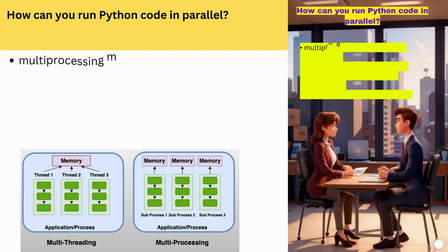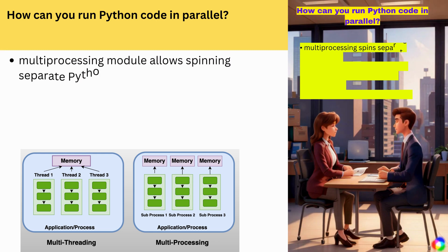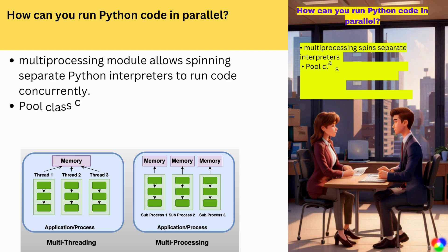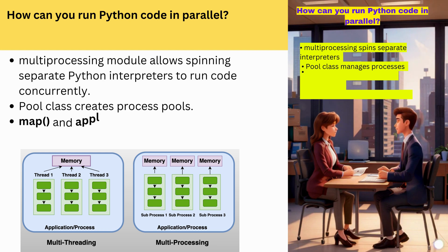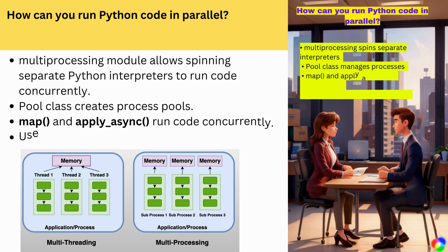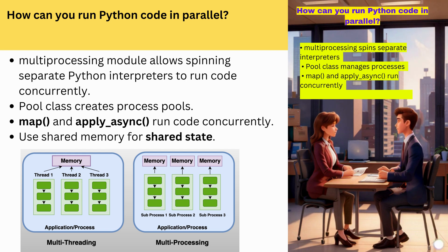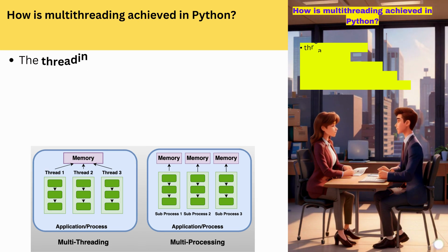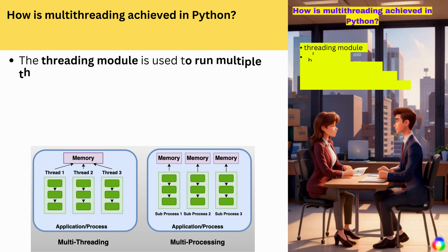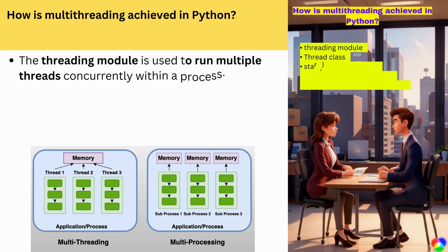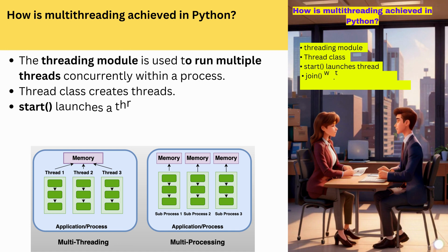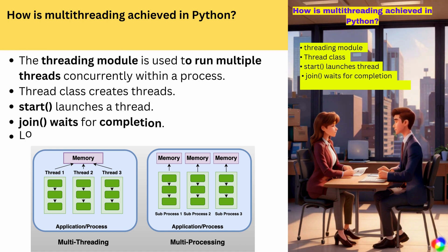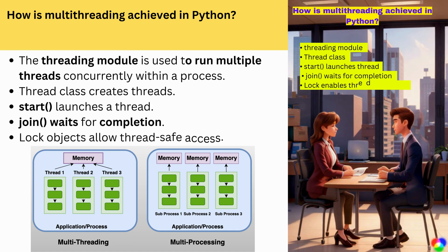How can you run Python code in parallel and how is multi-threading achieved? The multiprocessing module allows spinning up separate Python interpreters to run code concurrently. Pool class creates process pools; map and apply_async run code concurrently. The threading module runs multiple threads within a process. Thread class creates threads; start() launches a thread, join() waits for completion. Lock objects allow thread-safe access.